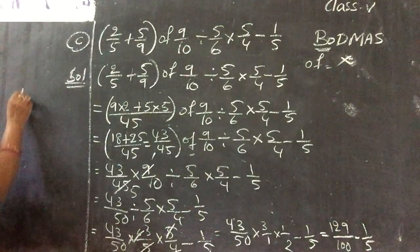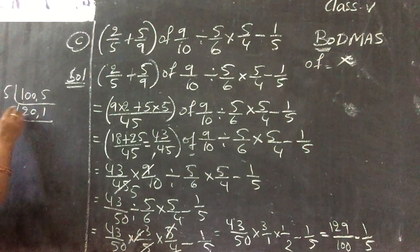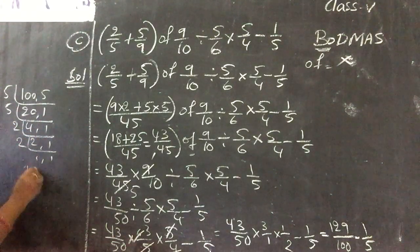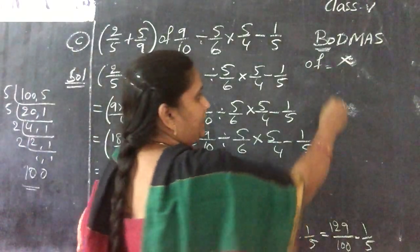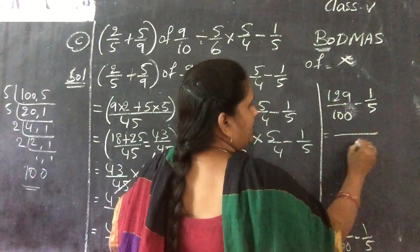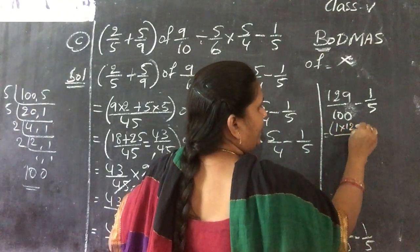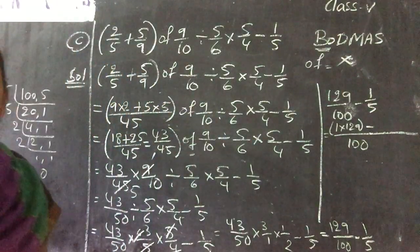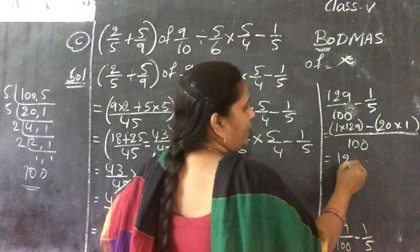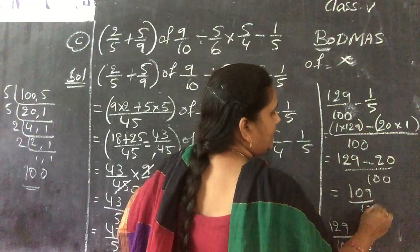Now do the LCM for 100 and 5 — LCM is 100. 100÷100=1, so 1×129=129; 100÷5=20, so 20×1=20. That gives 129/100 − 20/100 = 109/100 as the answer.